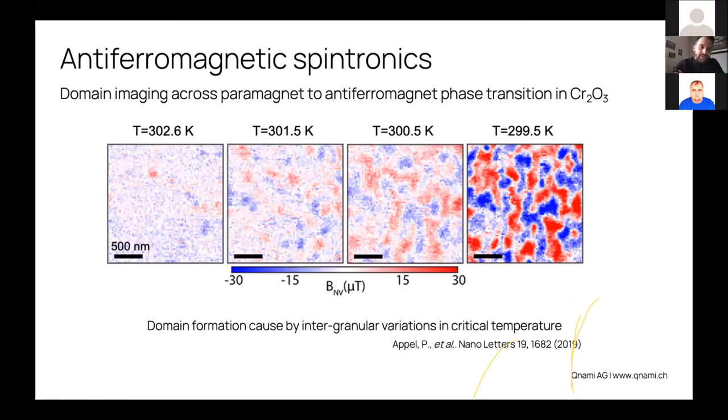Here is a first example of a measurement done with scanning NV microscopy. It was done on a material called chromium oxide, and what you see here is a transition from a phase at high temperature where the material is a paramagnet to a phase where it becomes an antiferromagnet. Here we do see some structures, some magnetic domains appear. This observation was actually possible thanks to the technology. The range of fields we're talking here is extremely small fields, in the microtesla range, because in antiferromagnets only the top layer is uncompensated and generates stray fields.